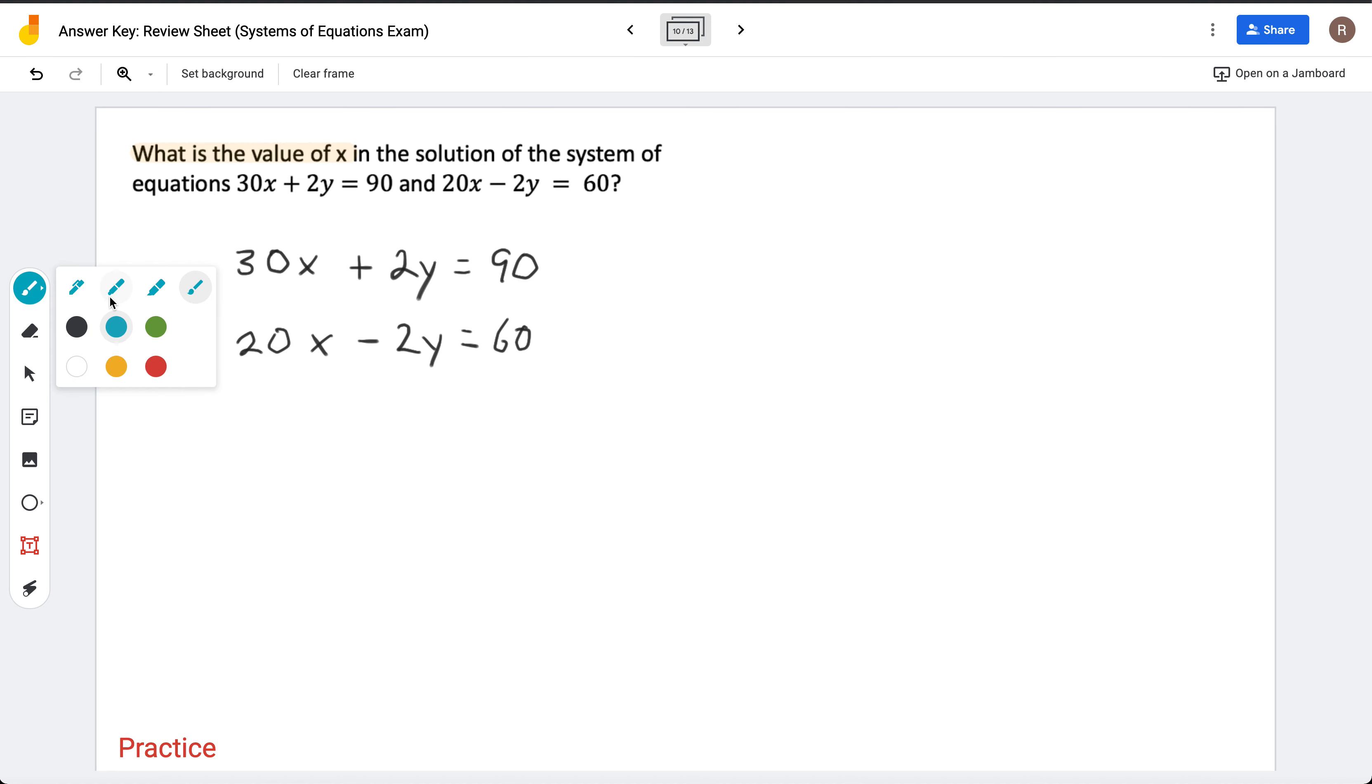So I already see that both of these equations are in standard form. And I know that the best method for standard form is elimination. I also notice that in both of these equations, they have something in common. They both have a matching coefficient of 2y, where one is positive and one is negative.